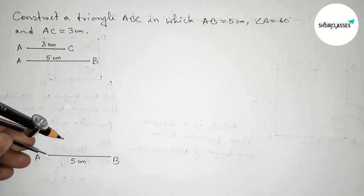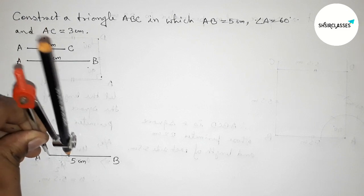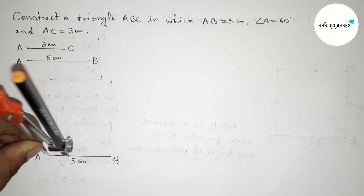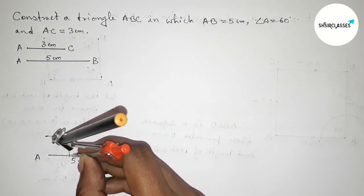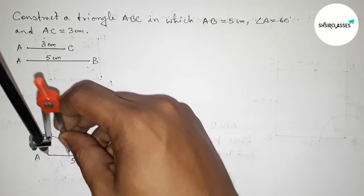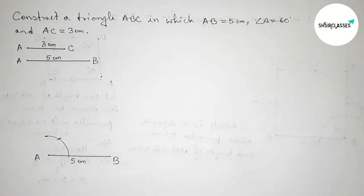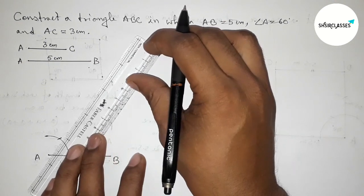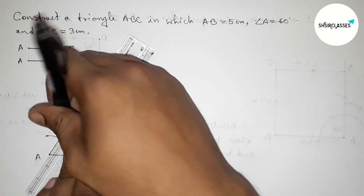Next, drawing a 60 degree angle at point A. Putting the compass on point A and taking any length, drawing an arc. Again putting the compass at the same position, taking the same length, and cutting the arc. Now joining this line to get a 60 degree angle.